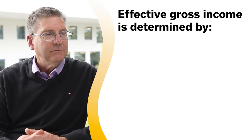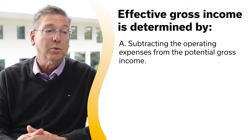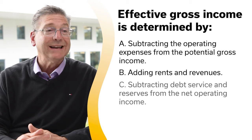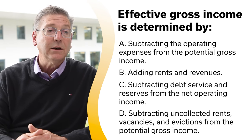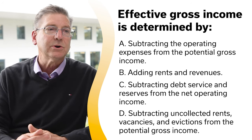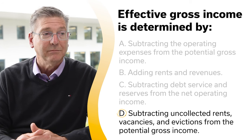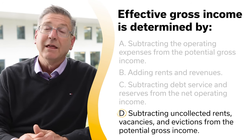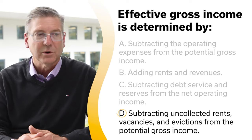Effective gross income is determined by: A, subtracting the operating expenses from the potential gross income; B, adding rents and revenues; C, subtracting debt service and reserves from the net operating income; or D, subtracting uncollected rents, vacancies, and evictions from the potential gross income. The correct answer is D. To determine the effective gross income, rents and revenues are combined to total the potential gross income. The uncollected rents, vacancies, and evictions are then subtracted from that total to equal the effective gross income.